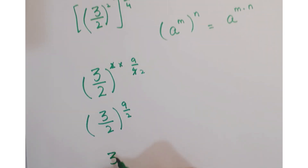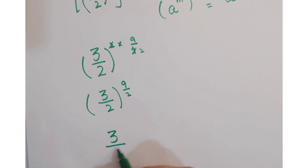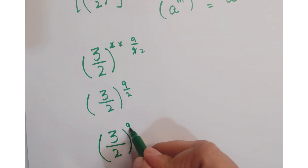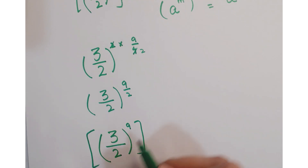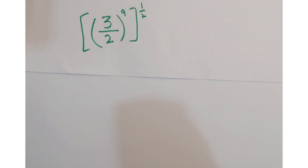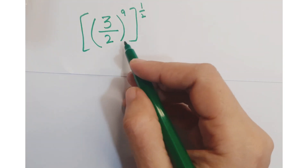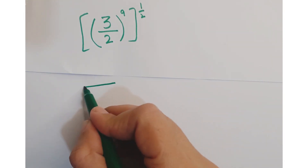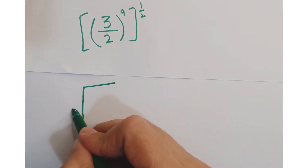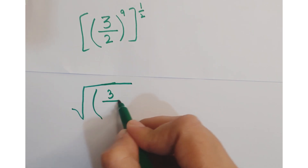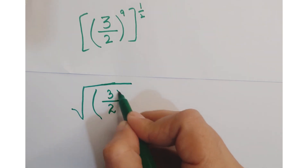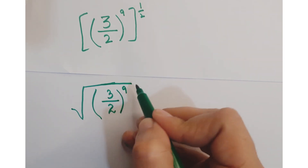The power 9 upon 2 can again be split up as 3 upon 2 whole to the power 9, whole to the power half. Further, in place of the power 1 upon 2, you can put the sign of square root.